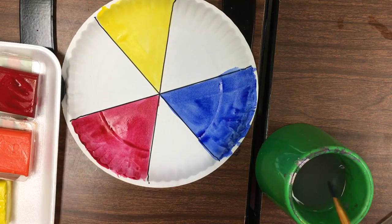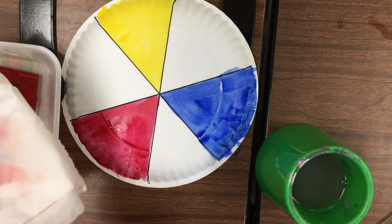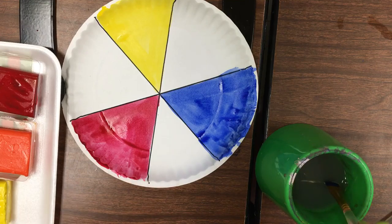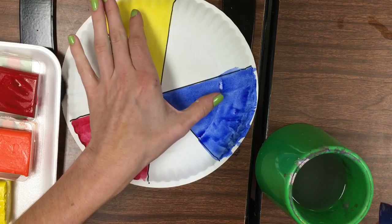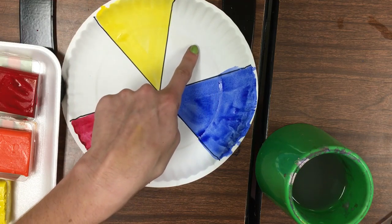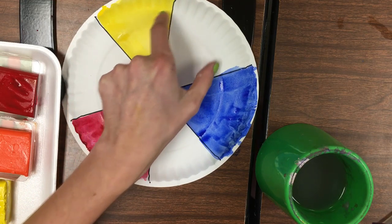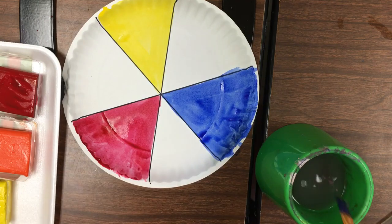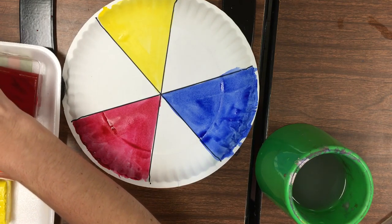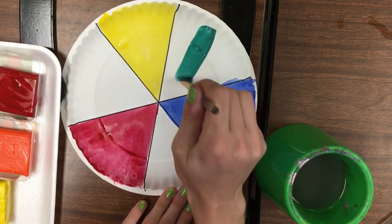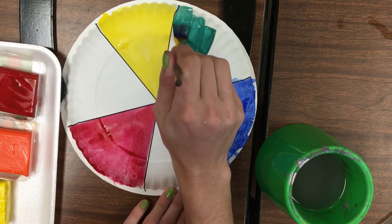Beautiful! Alright, next step we will be doing our secondary colors. Secondary colors are when we take two primaries and mix them together in the middle here. So I'm going to start by taking blue and yellow. Blue and yellow together will give me green. I have my green here, get that on my brush, and I'll start painting my green.